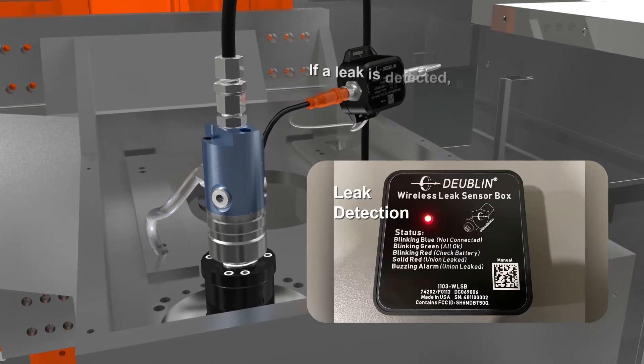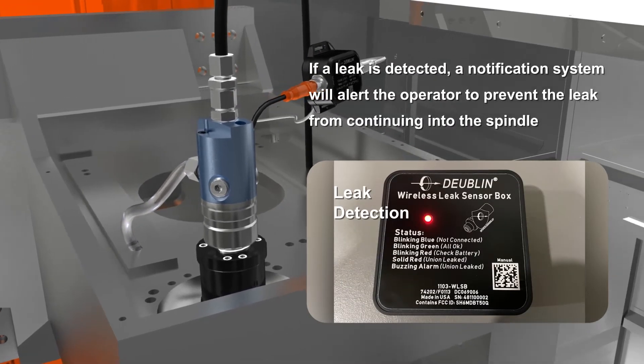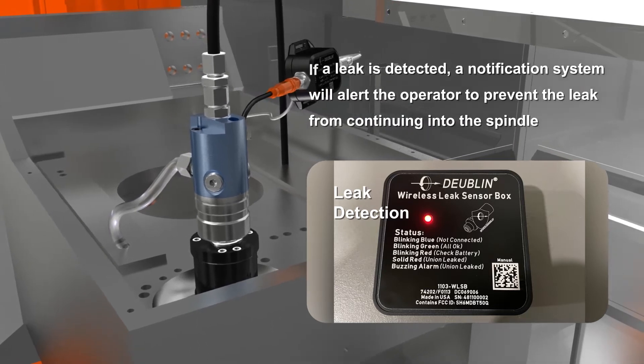If a leak is detected, a notification system will alert the operator to prevent the leak from continuing into the spindle.